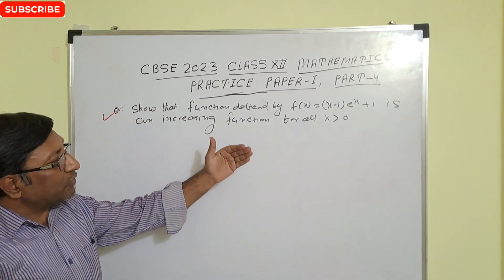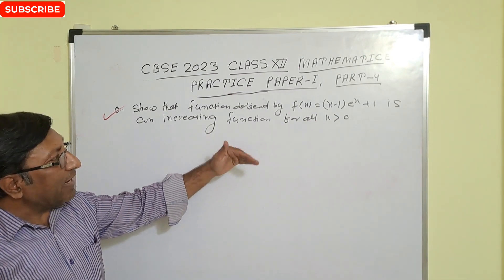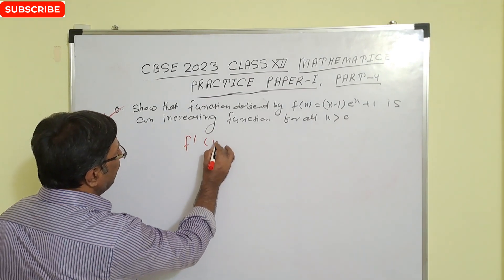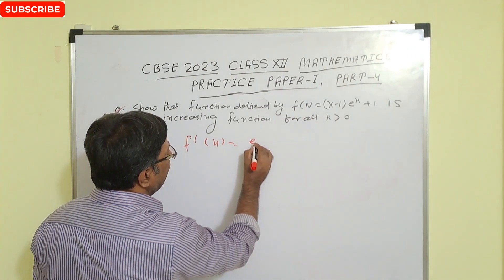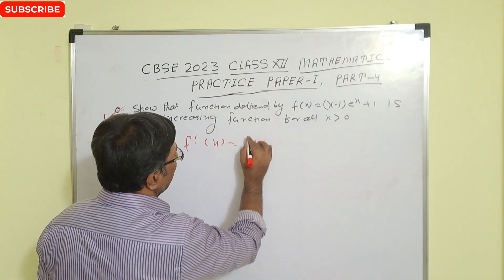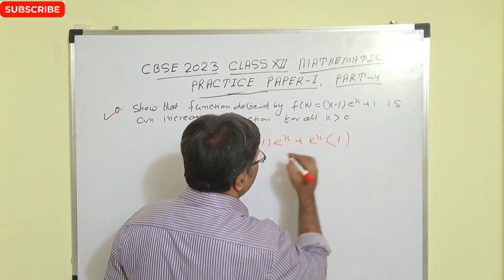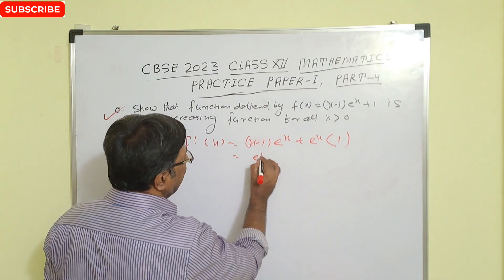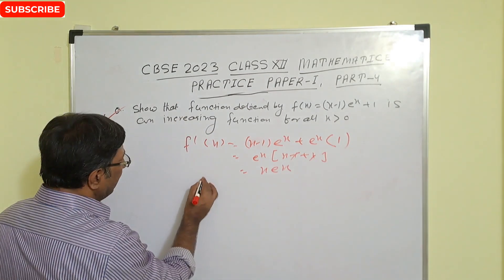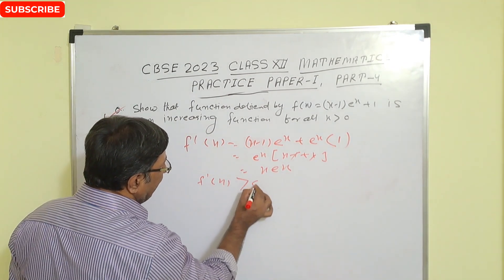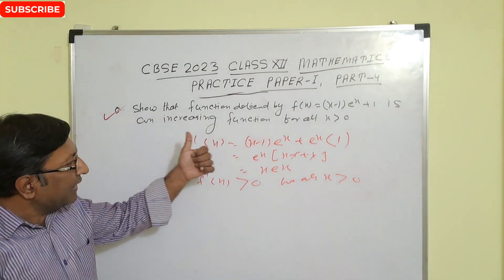Next question: show that the function f(x) = (x - 1)e^x + (x - 1) is an increasing function for all x > 0. Find f'(x) using the product rule: f'(x) = (x - 1)·e^x + e^x·1 = e^x[(x - 1) + 1] = x·e^x. Since x > 0 and e^x > 0, f'(x) = x·e^x > 0 for all x > 0. Therefore it is an increasing function.